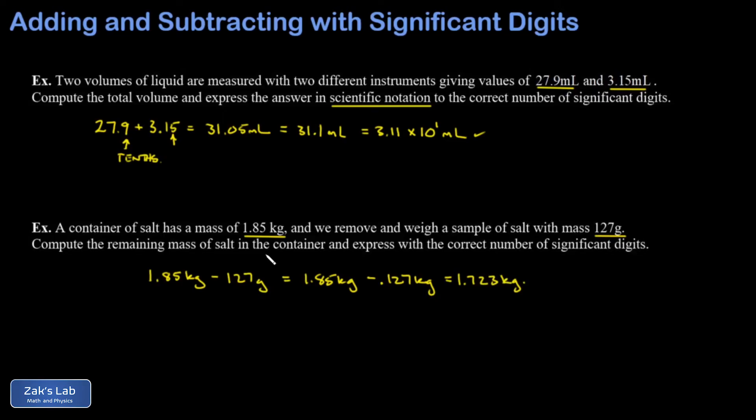Then I have to round off to the correct number of significant digits. And again, I look at the original participants in the problem expressed with the same units. And I ask which one of these is rounded to the crudest decimal place. And in this case, it's the hundredths place on that first measurement.